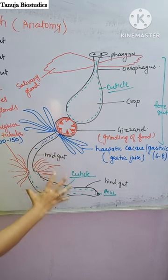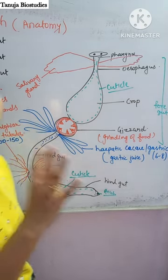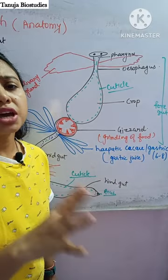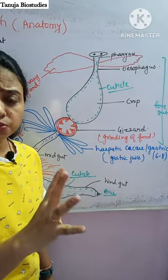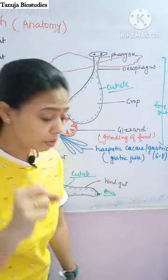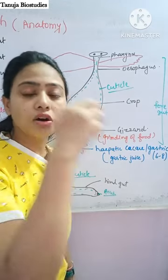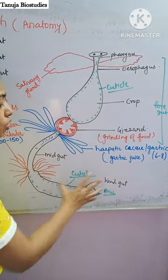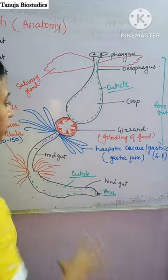At the junction of midgut and hindgut, Malpighian tubules are present — around 100 to 150 in number. Their function is to absorb nitrogenous waste from body fluids, convert it into uric acid, and release it into the hindgut, which ultimately gets released outside.